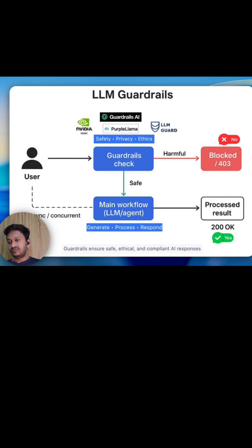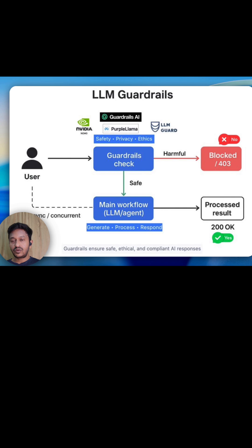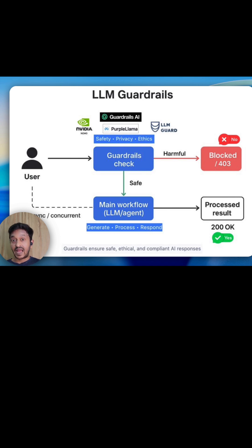There are many scenarios where LLM guardrails are a must. For example, scenario one can be data leakage. In a public chatbot, when someone accidentally shares their email ID in a conversation, the AI system can actually process it and might store it in the logs, which is a privacy issue.